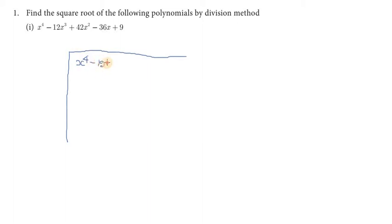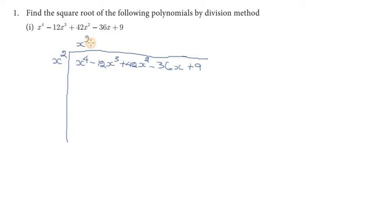First problem: x power 4 minus 12x cube plus 42x square minus 36x plus 9. For the first term, we split the value — x power 4 can be split as x square into x square. So x square into x square gives x power 4. We bring down and add the next two terms: minus 12x cube plus 42x square.